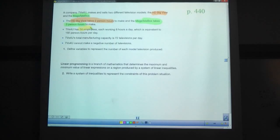TVs4U has 24 employees. It's not specific to one of our TVs. So, 24 employees each working eight hours a day, which is equivalent to 192 person hours a day. What's the most important information there? Think about it. Hopefully you came up with that person hours, since that matches up with the person hours here. TVs4U's total manufacturing capacity is 72 hours per day. And this is my favorite part ever: TVs4U cannot make a negative number of televisions. It's actually a fairly classic limit that you can't have a negative amount. So, HDBigView is going to be X. Let's go with that. And Y is going to be MegaTelebox.